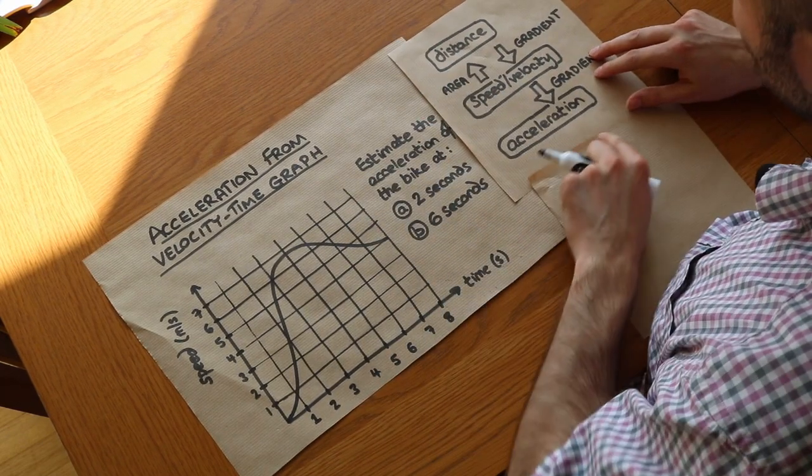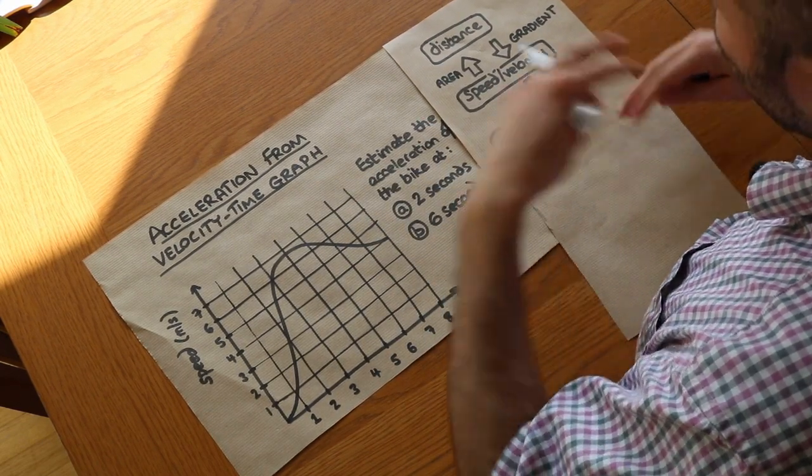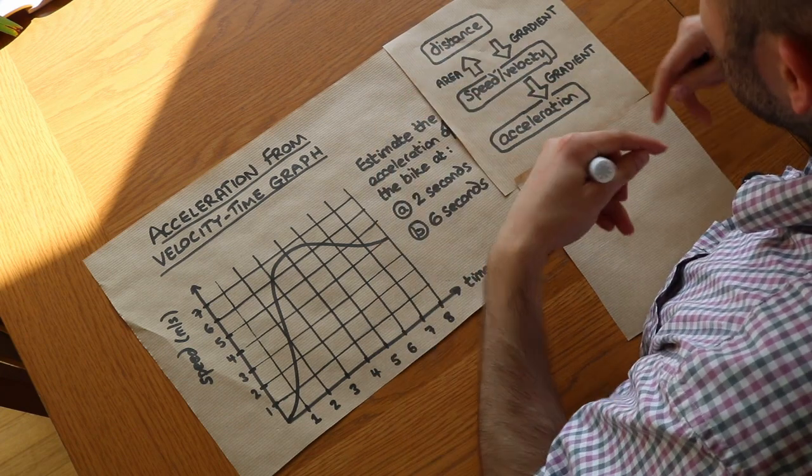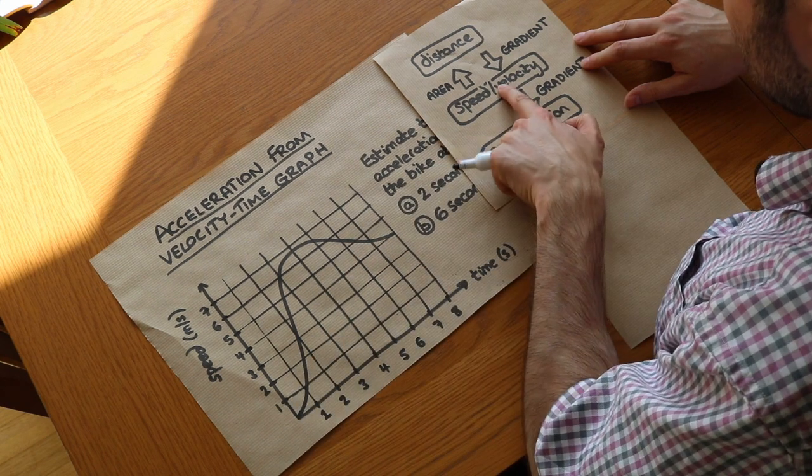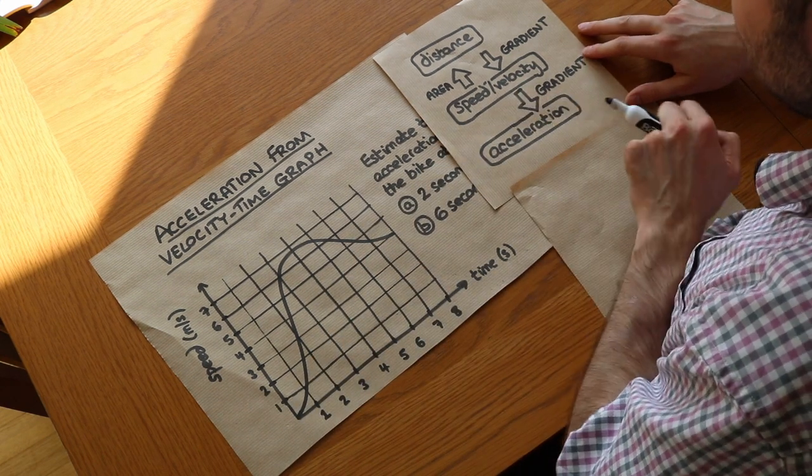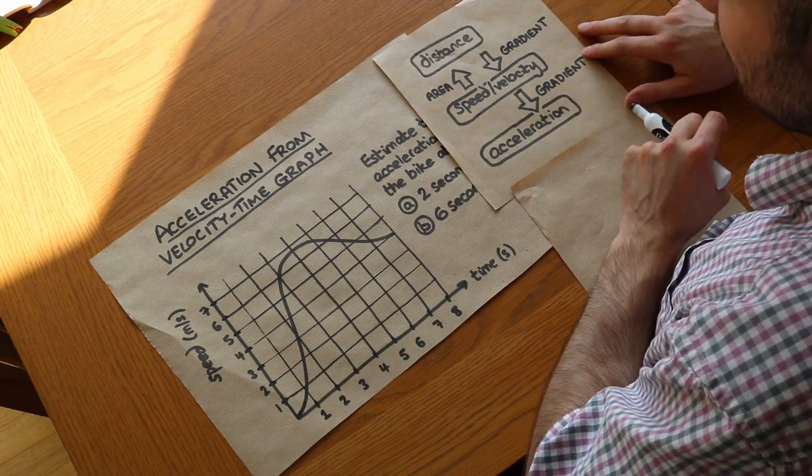And this is summarized by this nice handy chart here, which says how we can work out speed and acceleration from different types of graphs. So if we have a speed-time graph, as we do here, and we found the gradient of that speed-time graph, that would give us the acceleration.